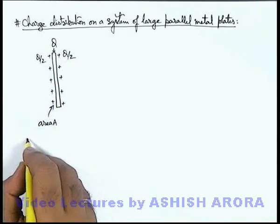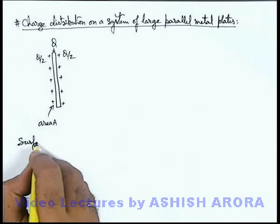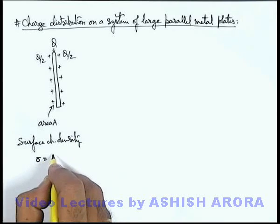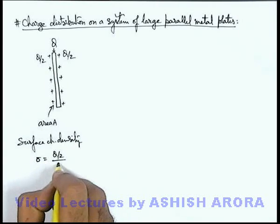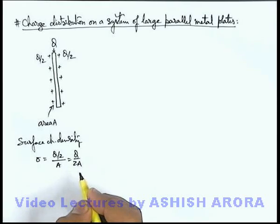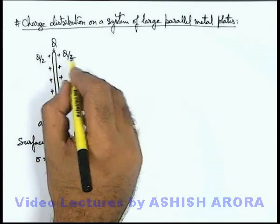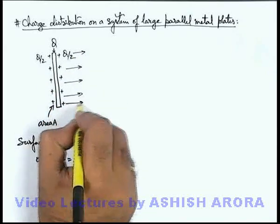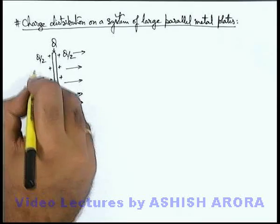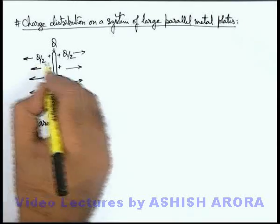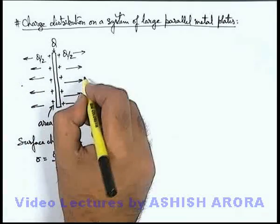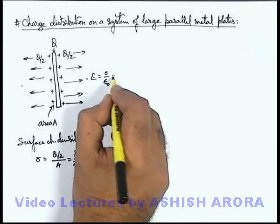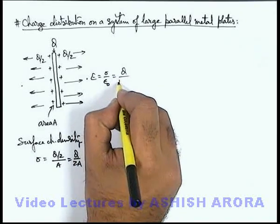For each surface we can find the surface charge density, which is sigma equal to (Q/2) divided by A, that is Q divided by 2A coulombs per meter square. In this situation, on both sides electric lines of force originate in the direction away from the metal plate. Since the plate is large, the electric field is uniform, and on either side the magnitude of electric field is sigma by epsilon-naught.